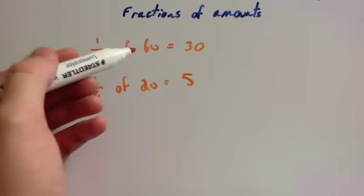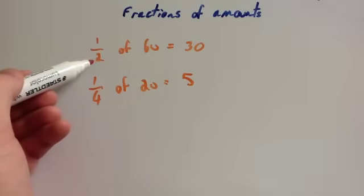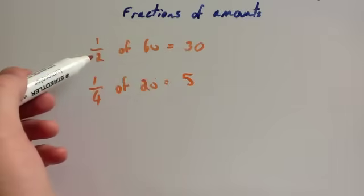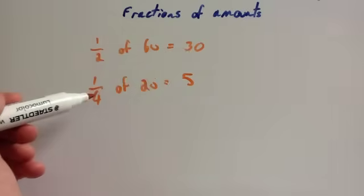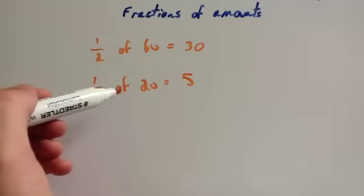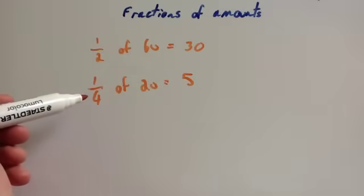You should be able to notice a pattern here so far. We've done 60 divided by 2 to get 30. So to get a half of a number, you divide it by 2. To get a quarter of a number, 20 divided by 4 is 5. So whenever you wanted to get a quarter of a number, you divide it by 4.